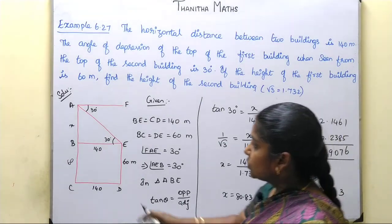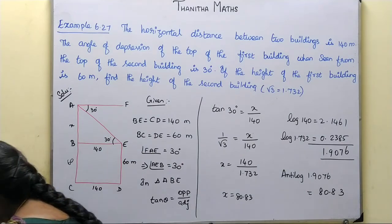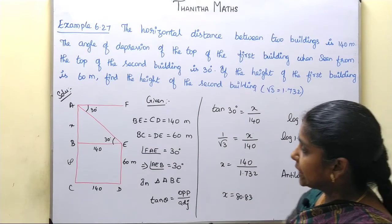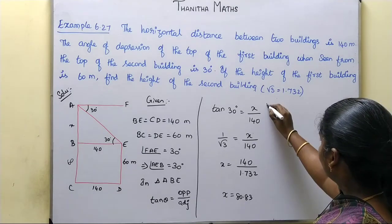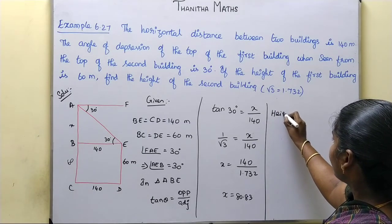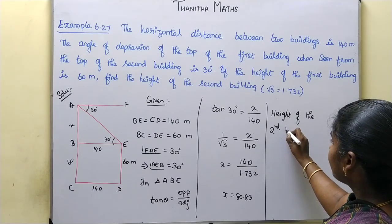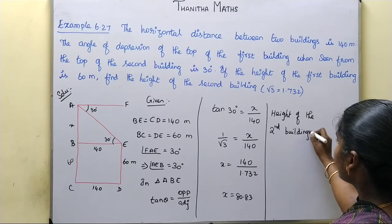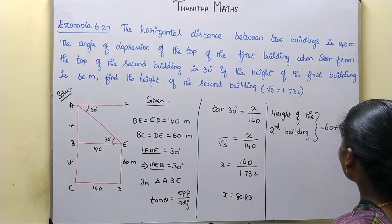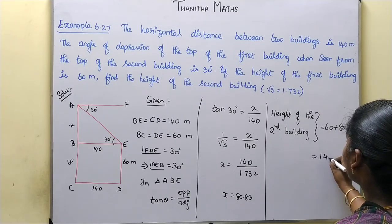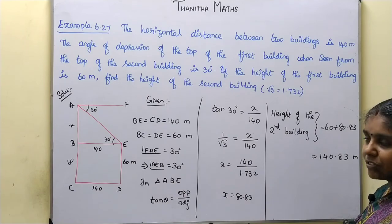So x is equal to 80.83m. The height of the second building equals the height of the first building plus x, which is 60 + 80.83 = 140.83m. This is the required height of the second building.